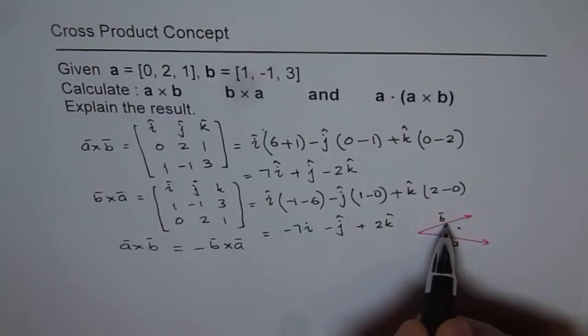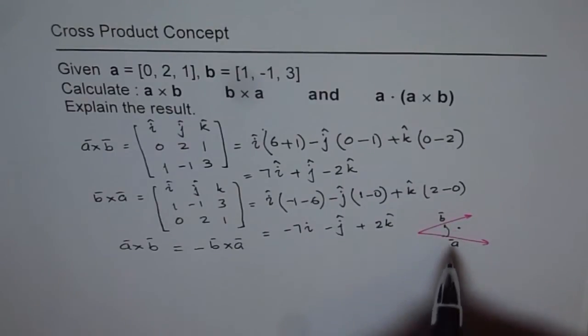But if you do B cross A, this vector will be going inside the paper. So the direction will be right opposite to A cross B and that is what we see here. That is one part of it.